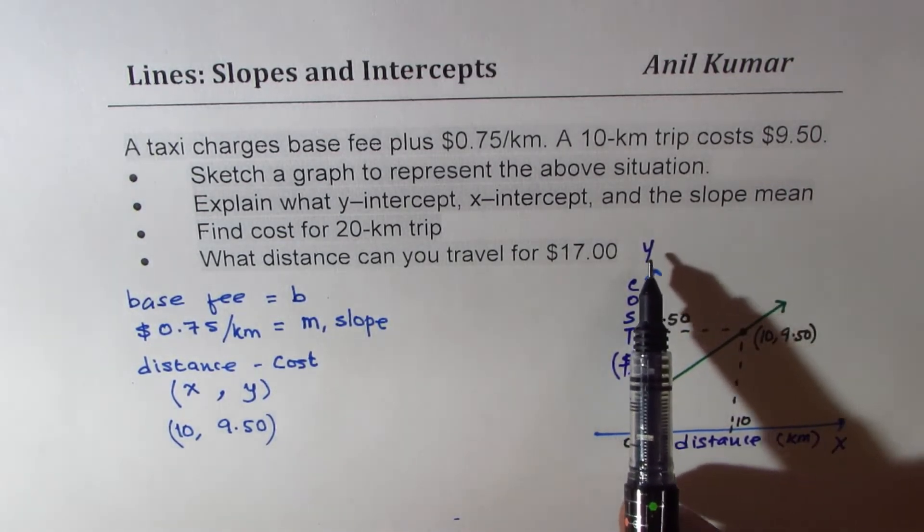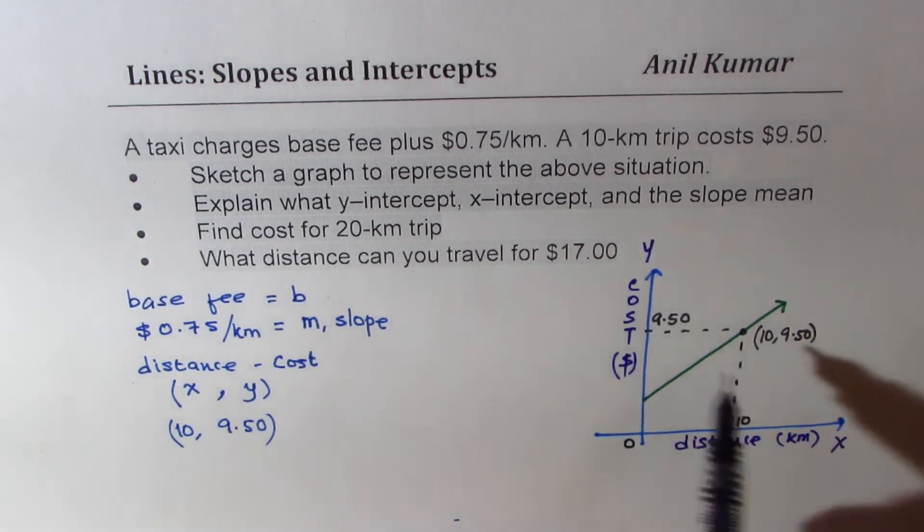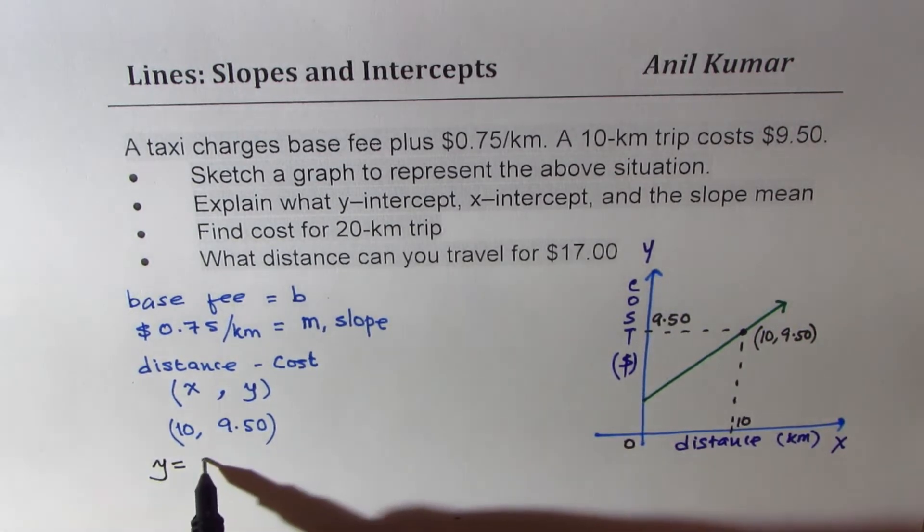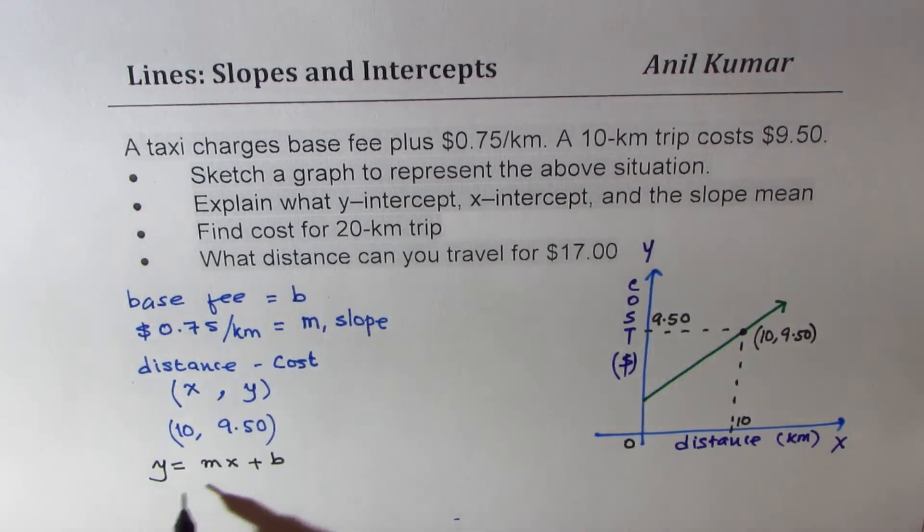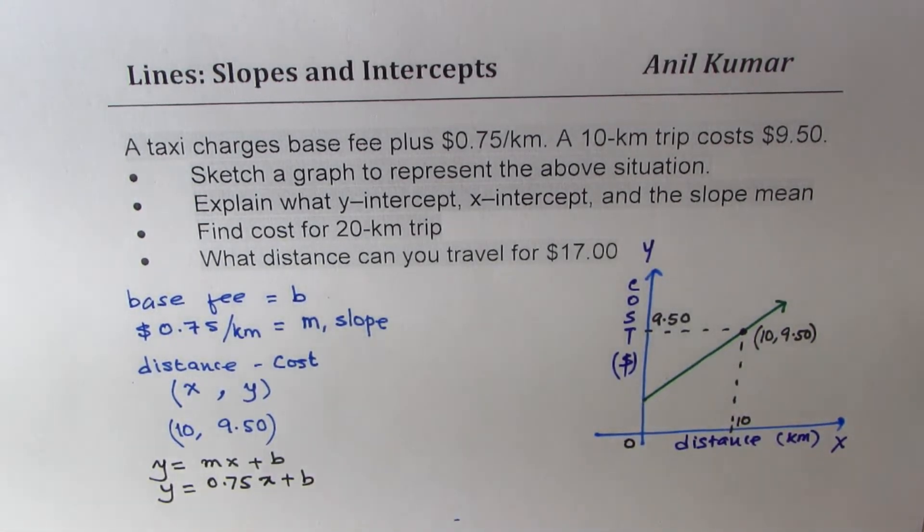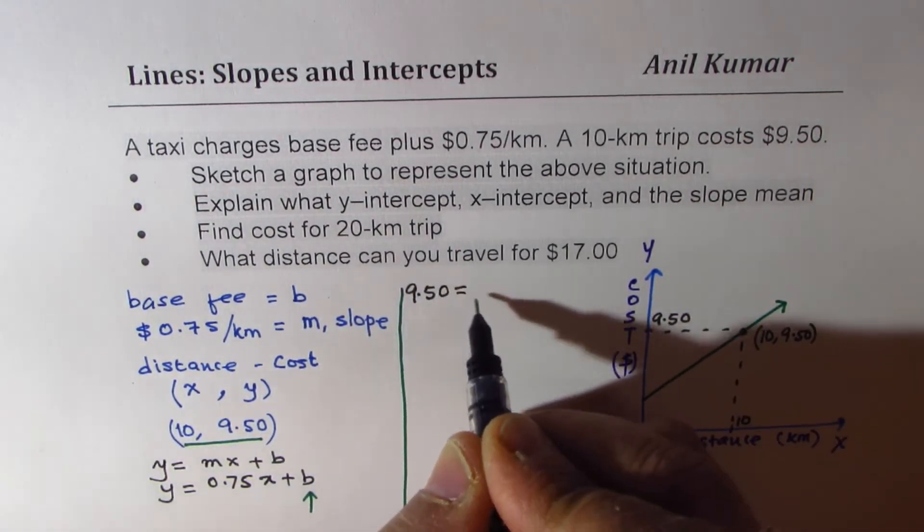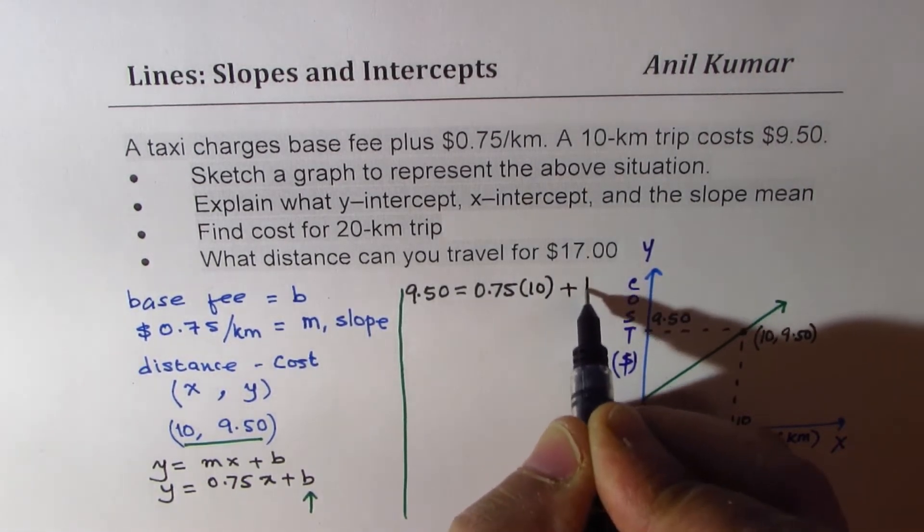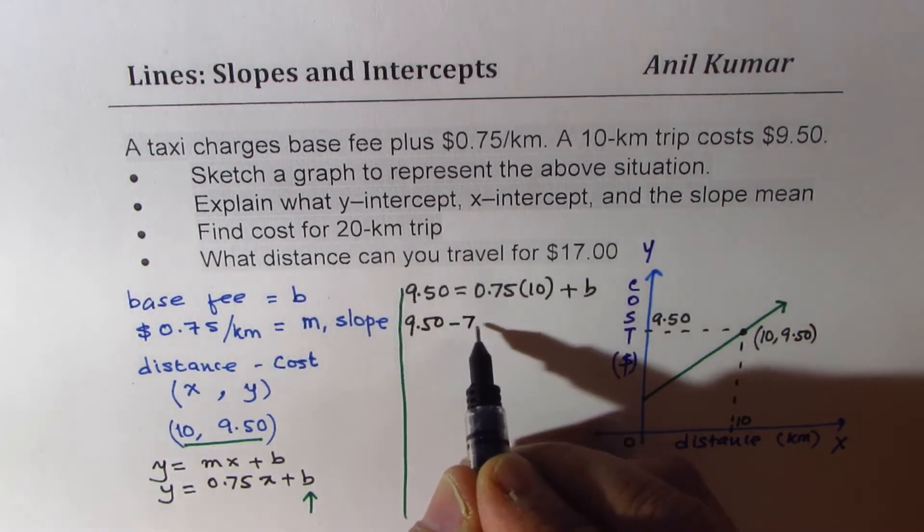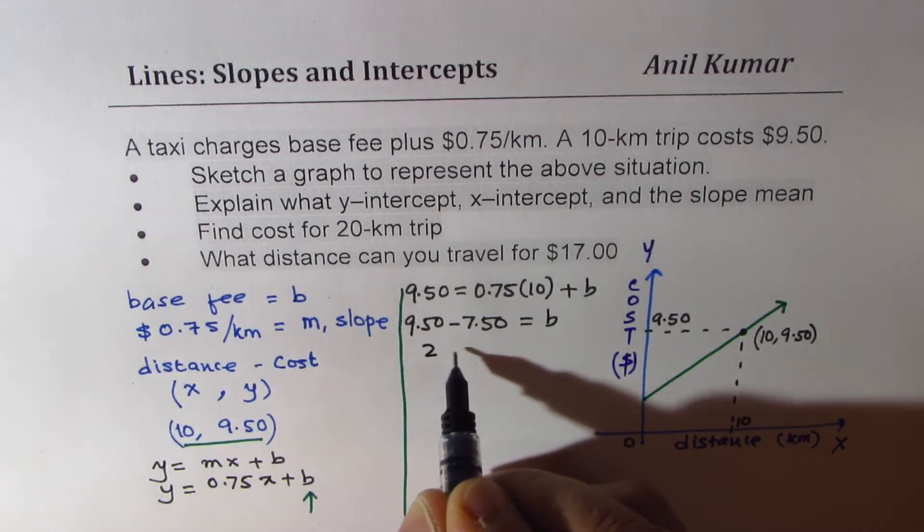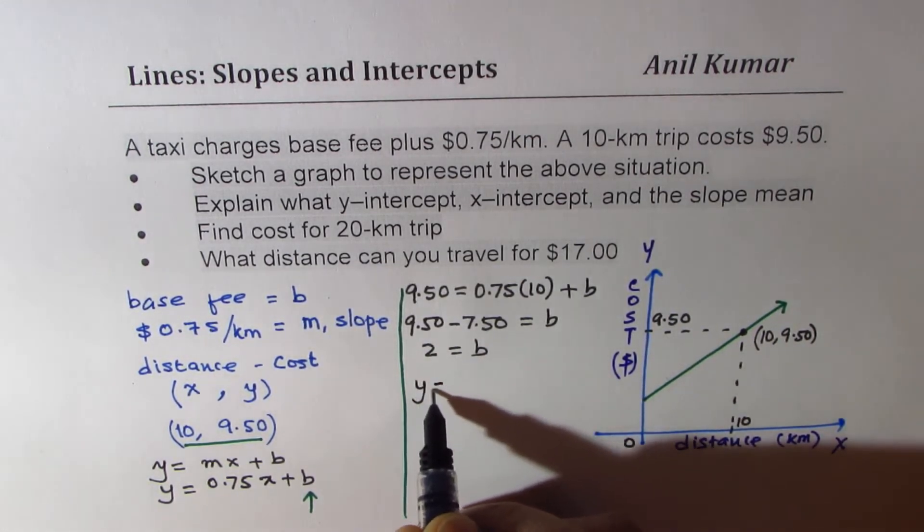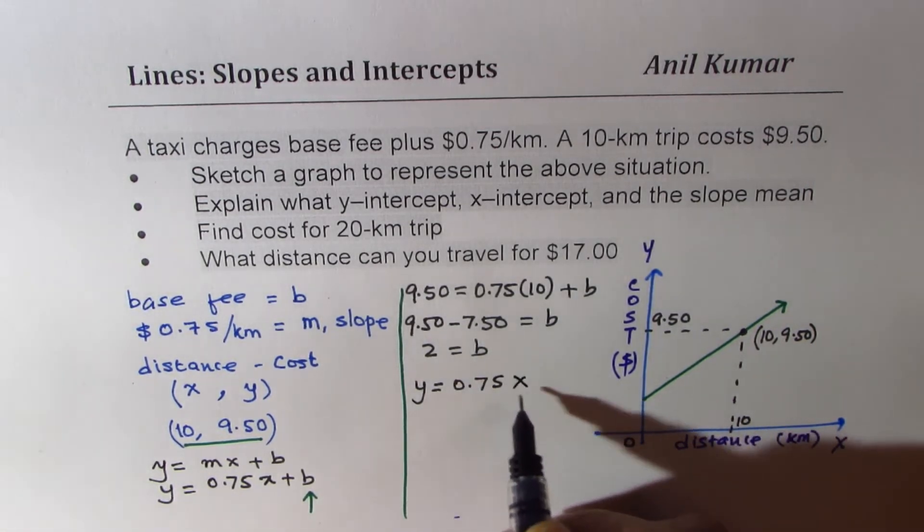So if the y-axis is the cost and x-axis is the distance, then we could write a relation y = mx + b, where slope is 0.75, so y = 0.75x + b. Now, it is a question of finding b. Since we know the point (10, 9.50), we can find what b is. So 9.50 = 0.75 times 10 plus b. So 9.50 minus 7.50 equals b, and that is 2. So b is 2.